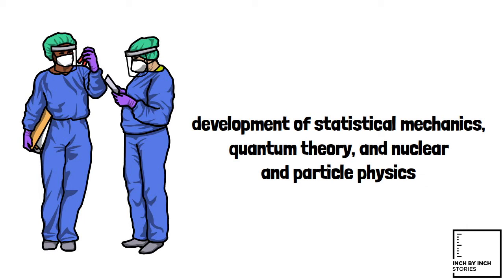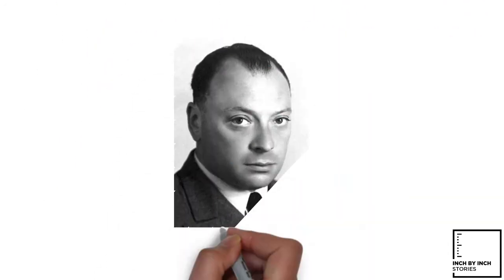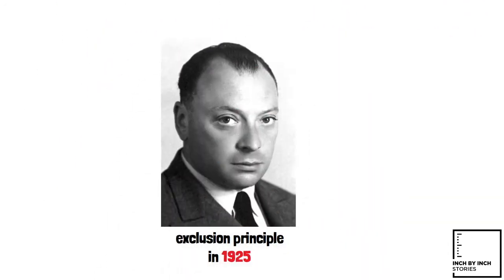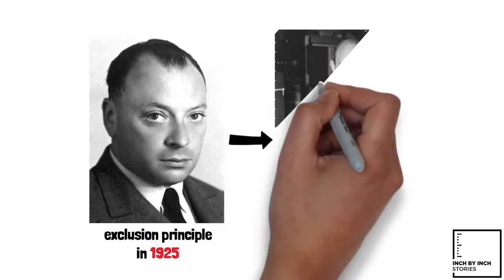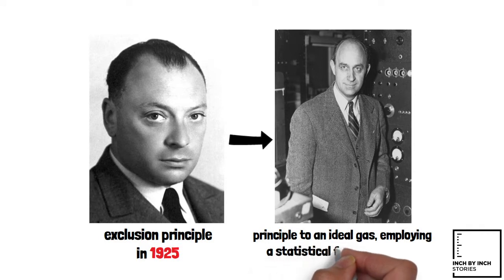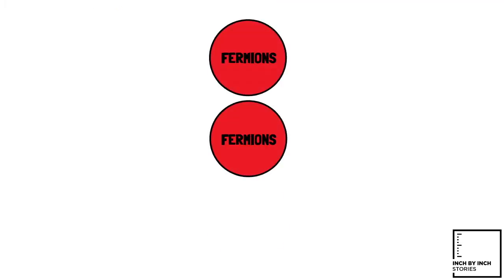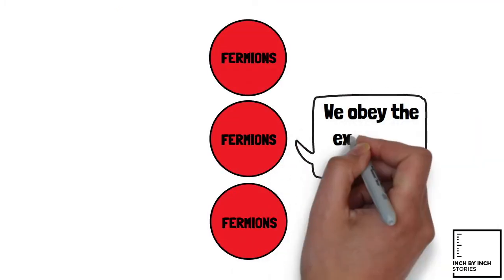Fermi's first major contribution involved the field of statistical mechanics. After Wolfgang Pauli formulated his exclusion principle in 1925, Fermi followed with a paper in which he applied the principle to an ideal gas, employing a statistical formulation now known as the Fermi-Dirac statistics. Today, particles that obey the exclusion principle are called Fermions.